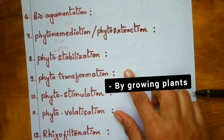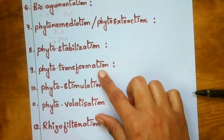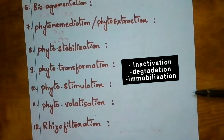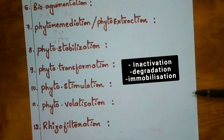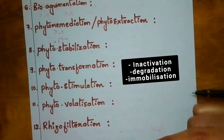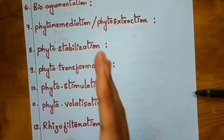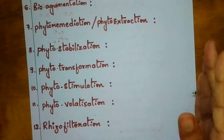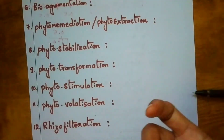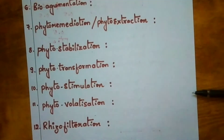Phytotransformation is the conversion of environmental substances as a direct result of plant metabolism, leading to their inactivation, degradation — also called phytodegradation — or immobilization. That is called phytotransformation.